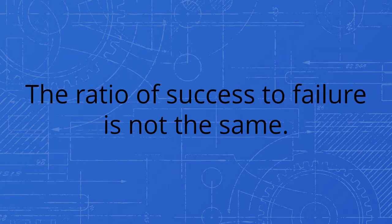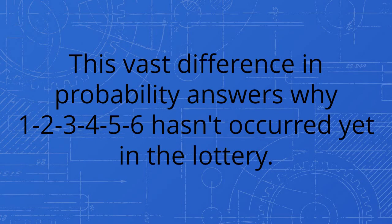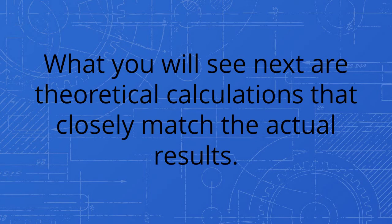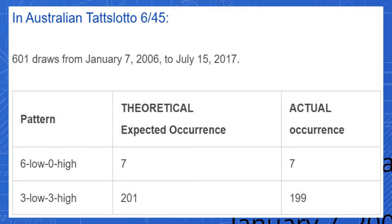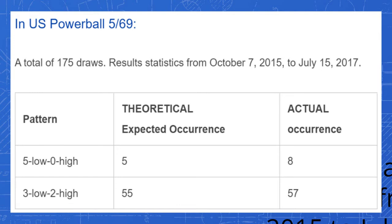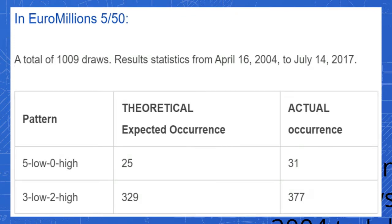The ratio of success to failure is not the same. This vast difference in probability answers why one, two, three, four, five, six hasn't occurred yet in the lottery. What you will see next are theoretical calculations that closely match the actual results. In Australian TattsLotto 6/45, there are 601 draws from January 7, 2006 to July 15, 2017. The theoretical calculation always matches that of the actual results. In U.S. Powerball 5/69, there are 175 draws from October 7, 2015 to July 15, 2017. As always, theoretical calculation and the actual results are closely matched. In EuroMillions 5/50, there are 1,009 draws from April 16, 2004 to July 14, 2017. As expected, the actual results always agree with the theoretical calculation.